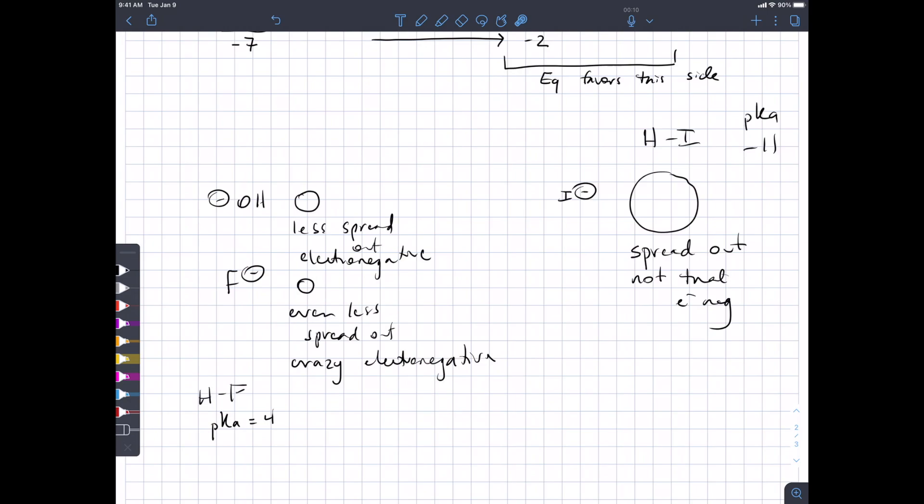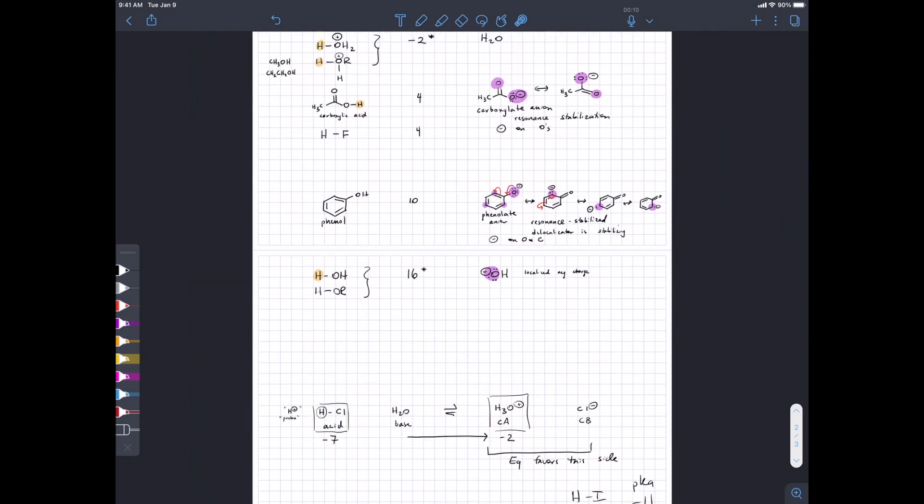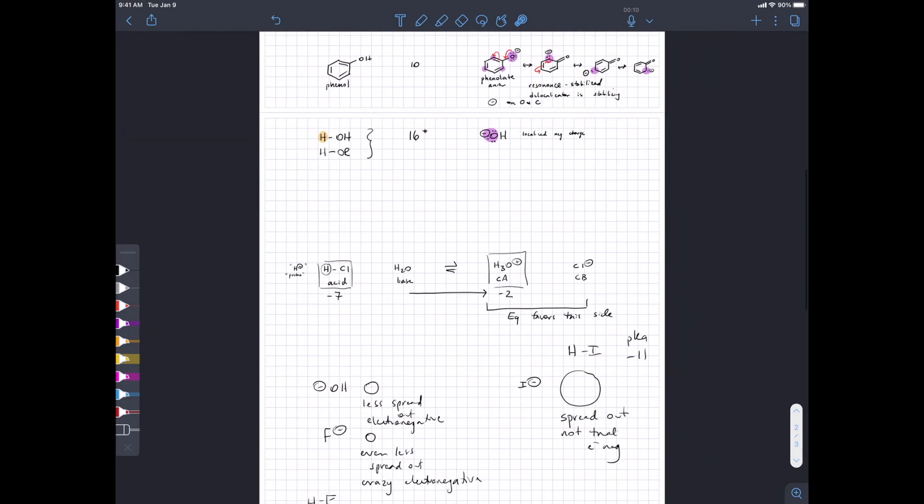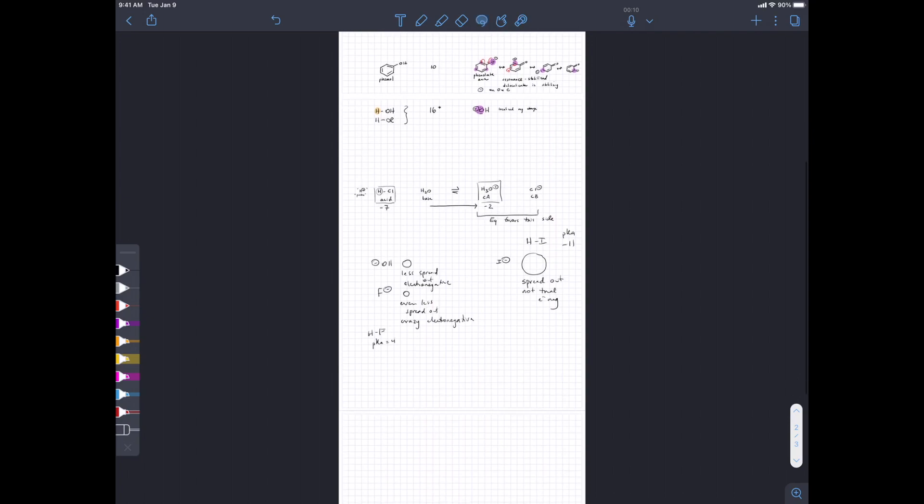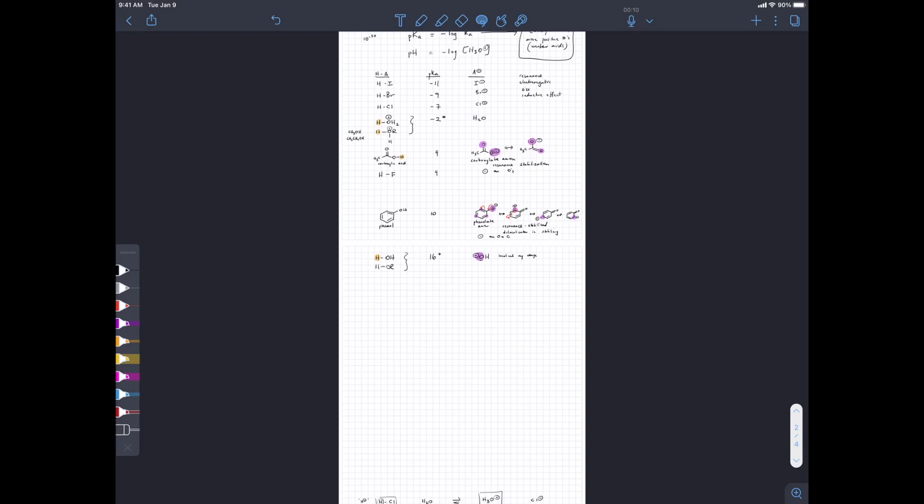As a general rule, stability determines the acidity of the acid. Stronger acids have more stable conjugate bases. Student asks if the strongest acid with the lowest pKa will always be the one that loses its proton. The answer is yes.